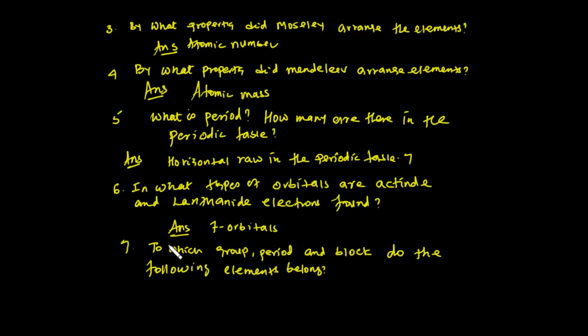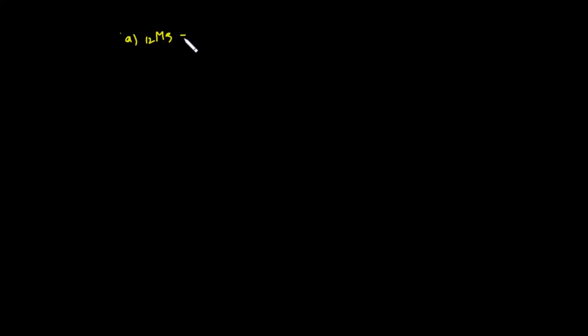Question number 7: To which group, period, and block do the following elements belong? You should write the electron configuration. The group, period, and block are determined from the electron configuration. The period equals the number of main energy levels. The block is determined by the last orbital into which the electron enters.